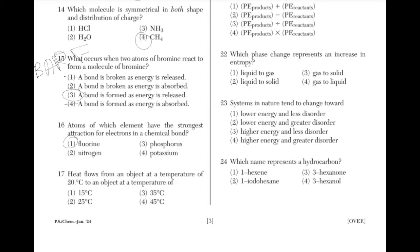Heat flows from an object at a temperature of 20 degrees Celsius to an object of temperature 15 degrees Celsius. Heat flows from objects of a higher temperature to objects of a lower temperature. All the other choices have higher temperatures than 20 degrees Celsius.